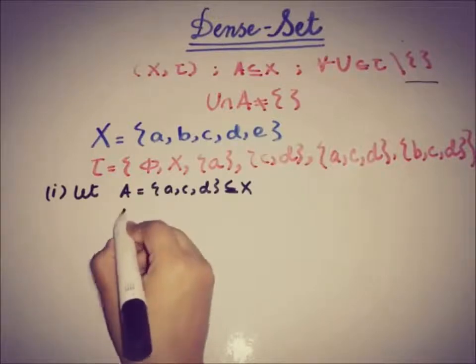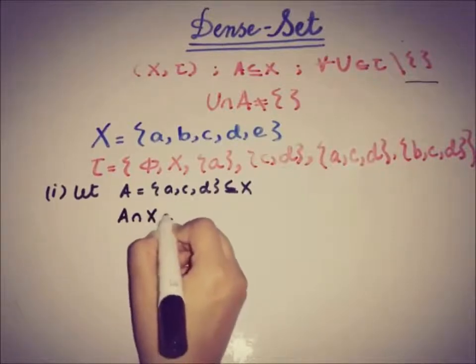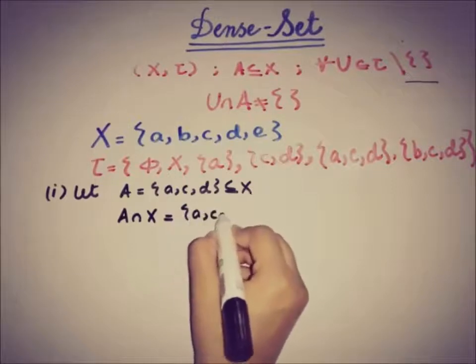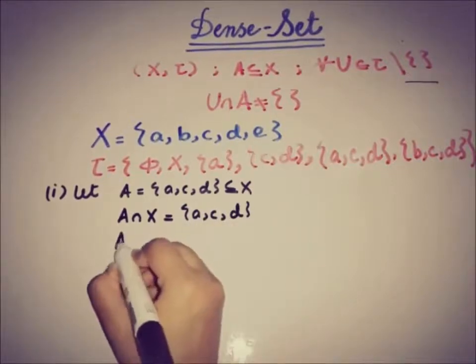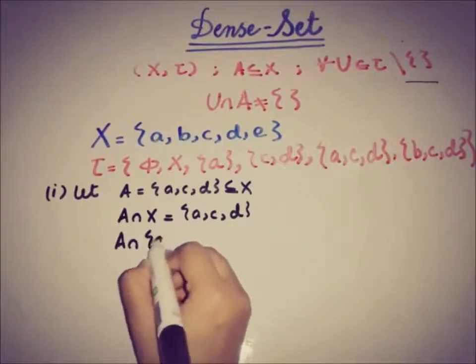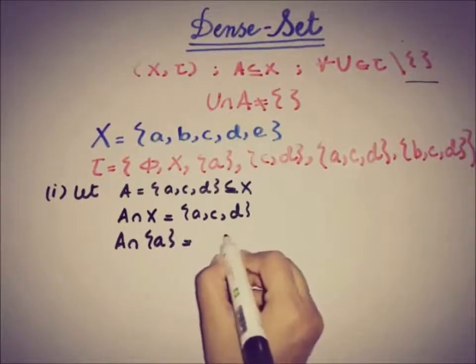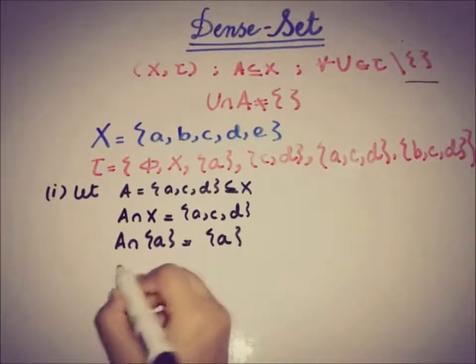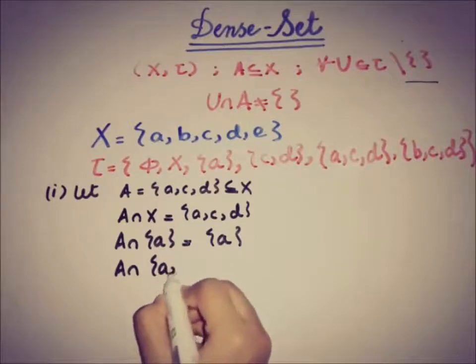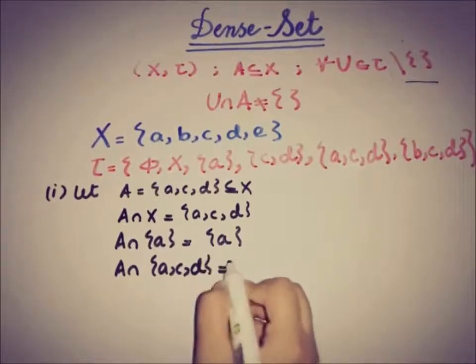So first of all, A intersection X equals A. Then A intersection with the set A is equal to A. A intersection with {a,c,d} gives again {a,c,d}.